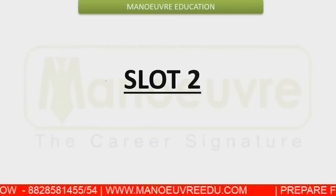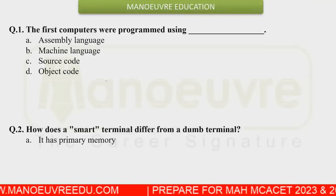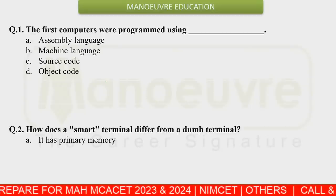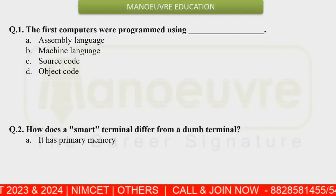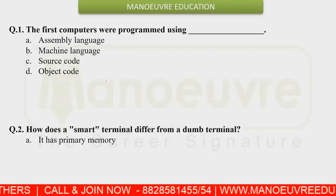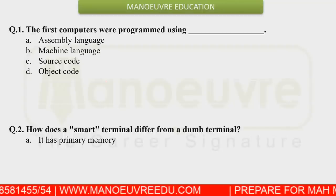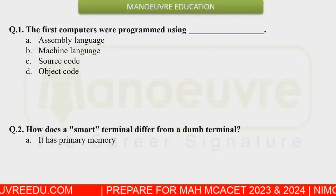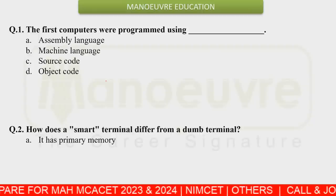Now moving to the slot two questions. The first question was: the first computers were programmed in which kind of language? The options were assembly language, machine language, source code, and object code. We know that programming produces source code and its corresponding object code is created.